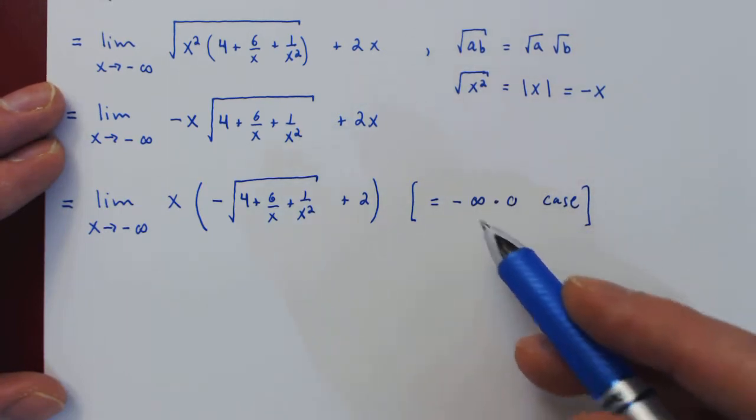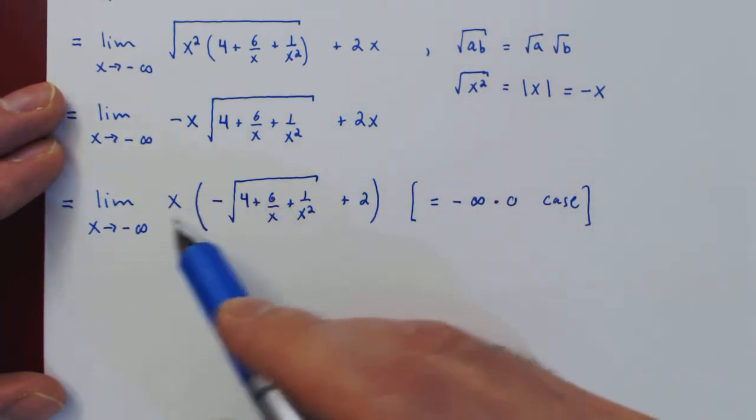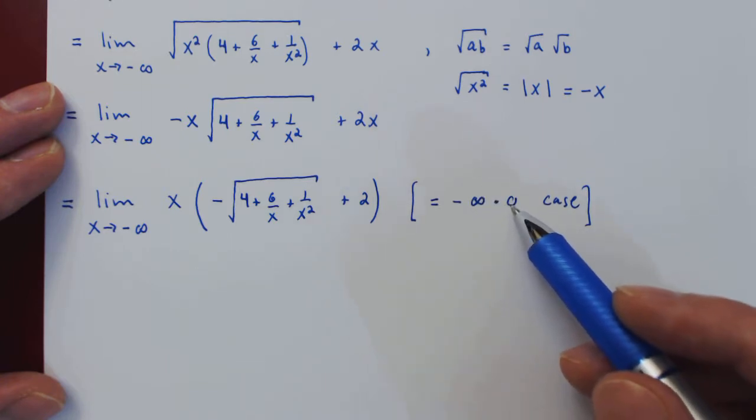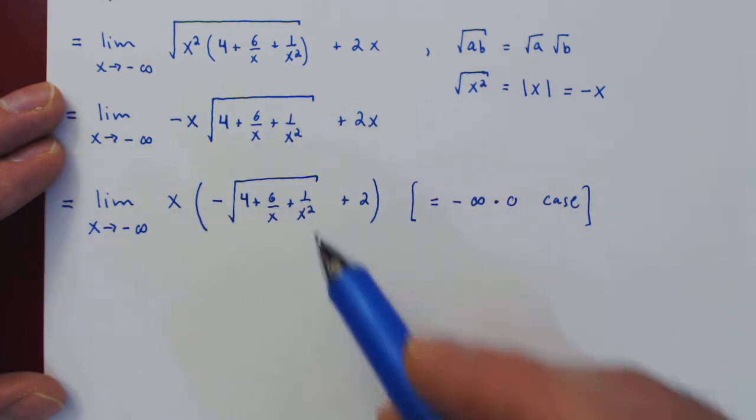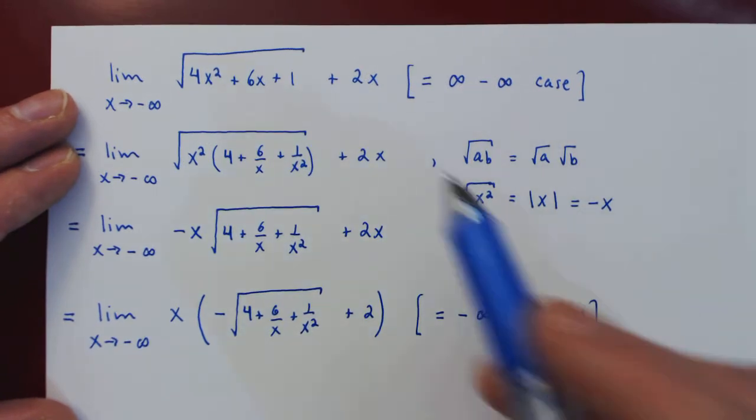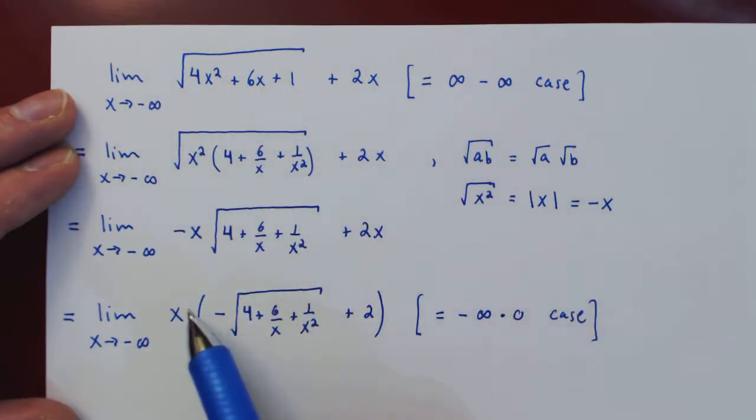So the second term of our product is approaching zero, and we have once again an indeterminate case. We have a product of two terms, one getting larger and larger, the other getting smaller and smaller, so it's not clear how this will play out in the limit. So by factoring x, the largest term from the expression, we did transform the case but we still don't know what the answer is.